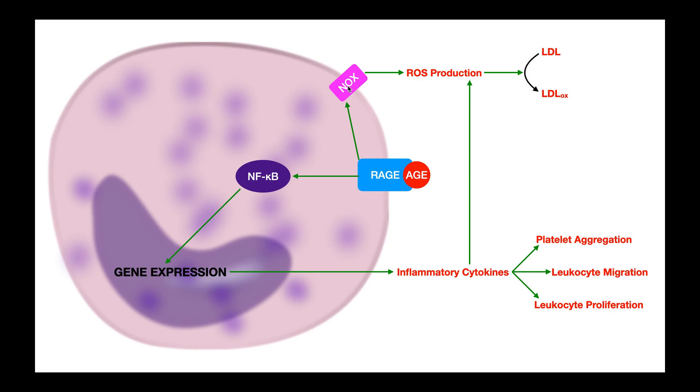So they can also further activate this NOX pathway. But also these inflammatory cytokines can induce platelet aggregation, particularly because they can induce the production of thromboxane A2 and shift the overall metabolism of cells towards the production of thromboxane A2 and less of prostacyclin, which is anti-platelet aggregation. They also induce leukocyte migration. So immune cells come to the area and also induces them to proliferate and differentiate.